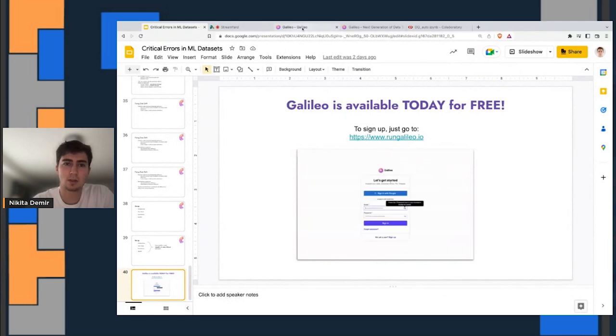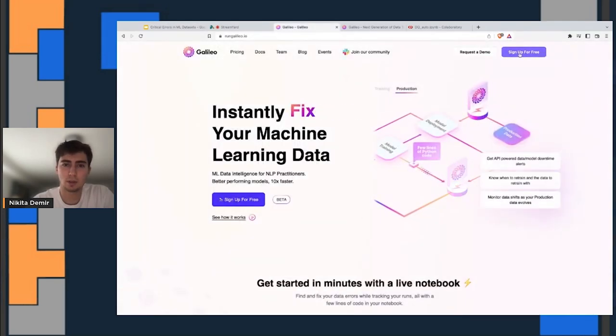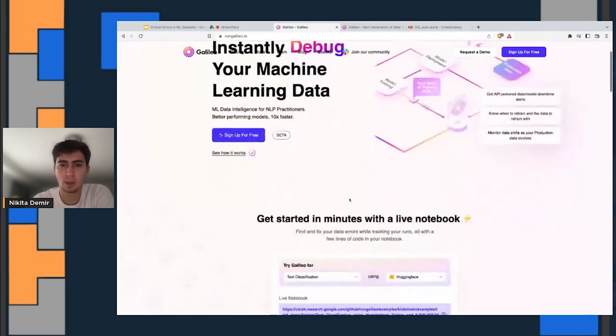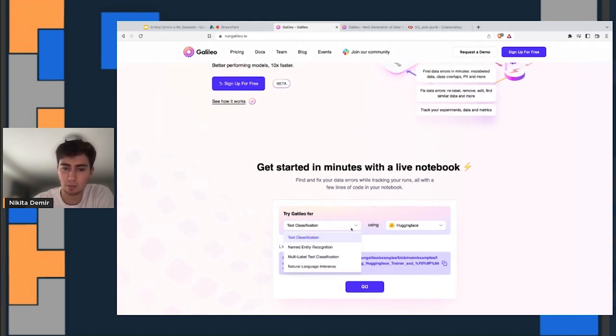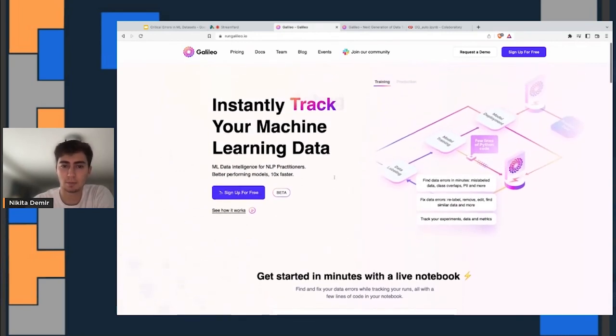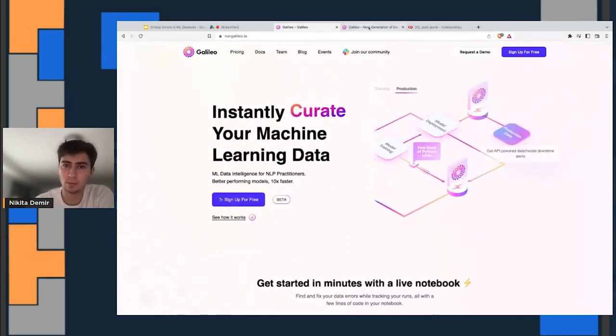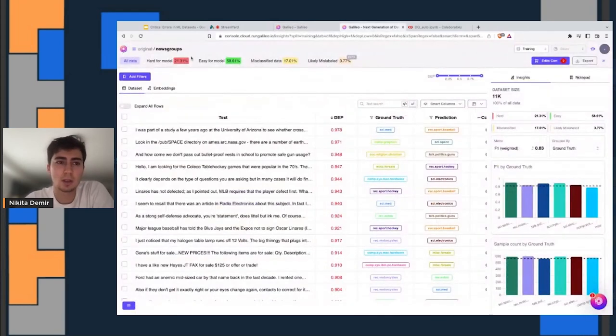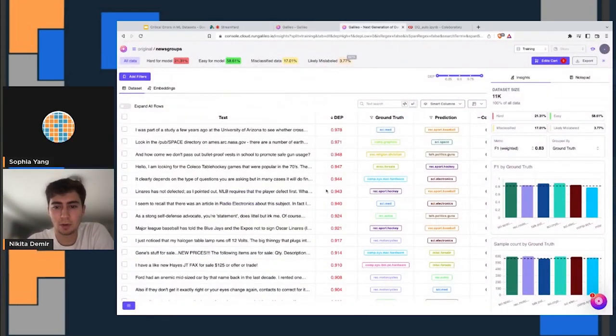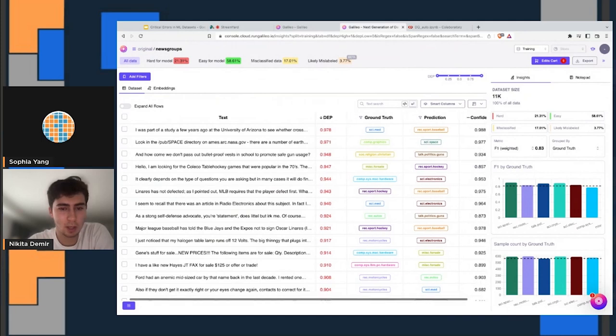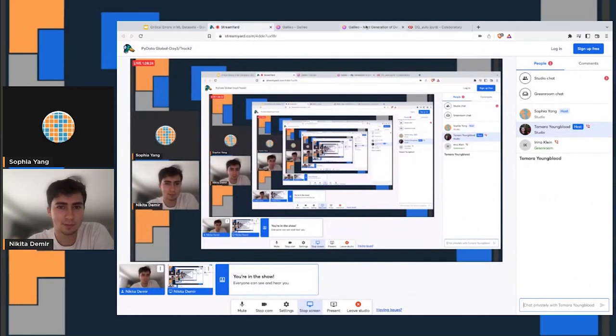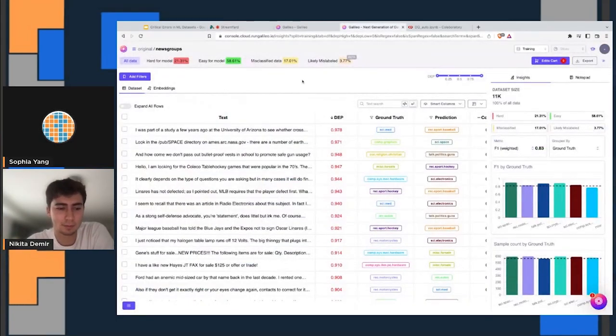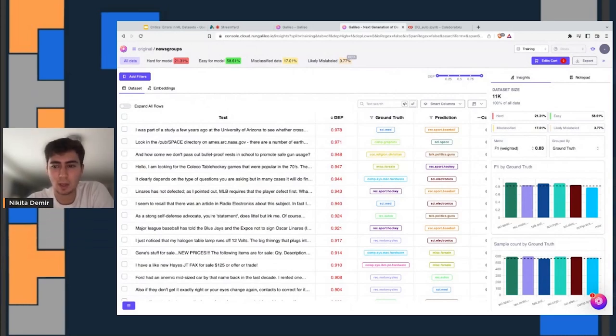So jumping over, this is our website, you can sign up for free and get started up here. We also have links to notebooks that show how we integrate with the different model frameworks that you have. And for now, we just support different NLP task types. Going over to what you'll see, this is the newsgroups dataset. It's one of the ones we provide as an example when you sign up. We have five minutes left. So just to make sure we're watching the time. Thank you.